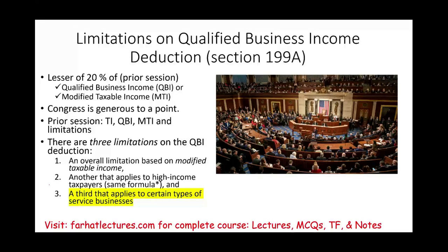In the first session, we learned generally about what the qualified business income deduction is — the lesser of qualified business income or modified taxable income — assuming no limitation. That's the general rule. Then we stated that Congress is generous to a point, and the point is that we have limitations, just like everything in taxation.